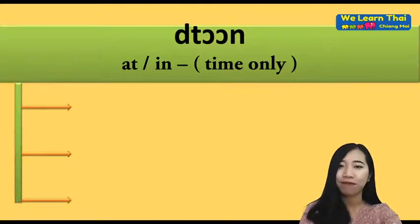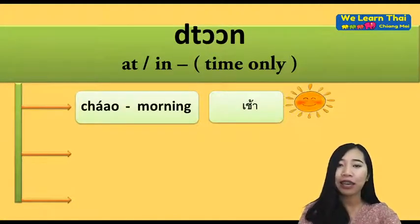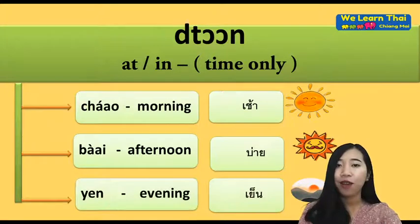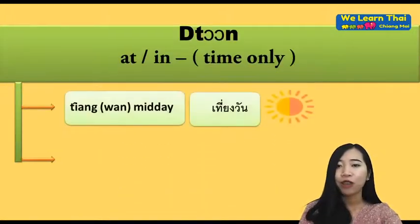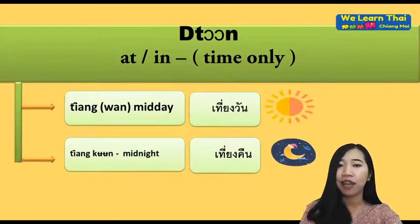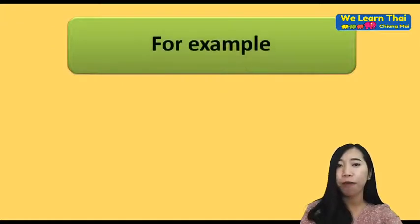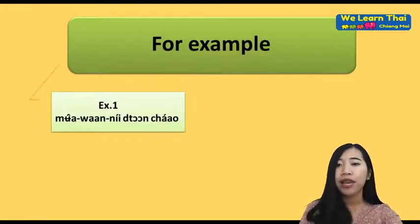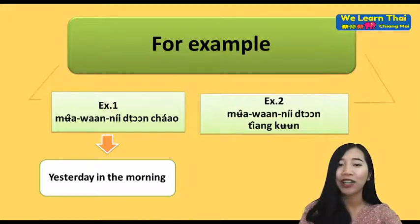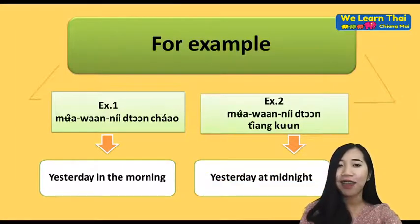Ton chao means 'in the morning,' ton bai means 'afternoon,' ton yen means 'evening.' Ton teen wan means 'midday' and ton teen kune means 'midnight.' For example: mea wani ton chao — yesterday in the morning; mea wani ton teen kune — yesterday at midnight.